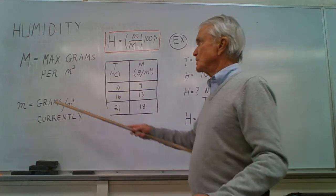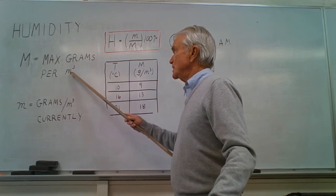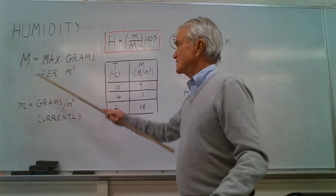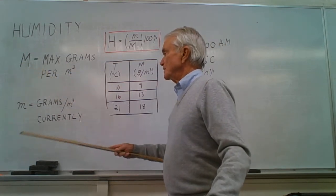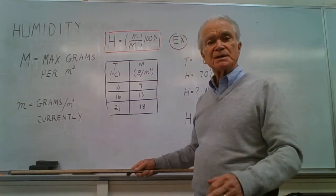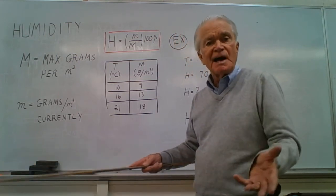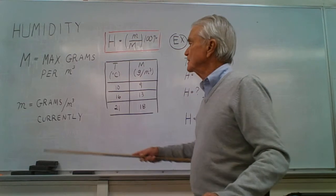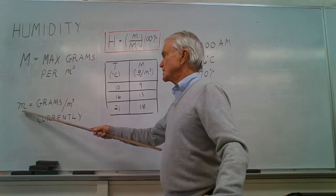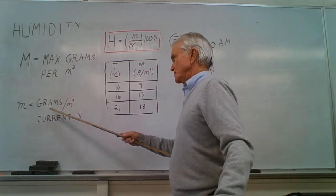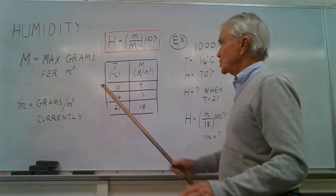We symbolize the maximum number of grams per cubic meter that are allowed as capital M. The actual number of grams in a cubic meter of the air in your location is symbolized as lowercase m, that's the current or actual number of grams per cubic meter.